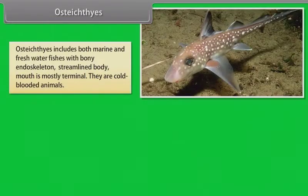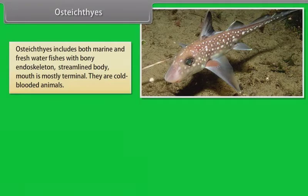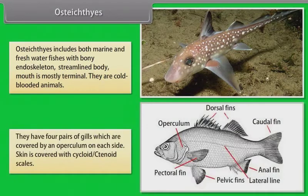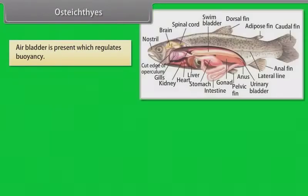Osteichthyes. Osteichthyes includes both marine and freshwater fishes with bony endoskeleton and streamlined body. Mouth is mostly terminal. They are cold-blooded animals. They have four pairs of gills, which are covered by an operculum on each side. Skin is covered with cycloid or ctenoid scales.